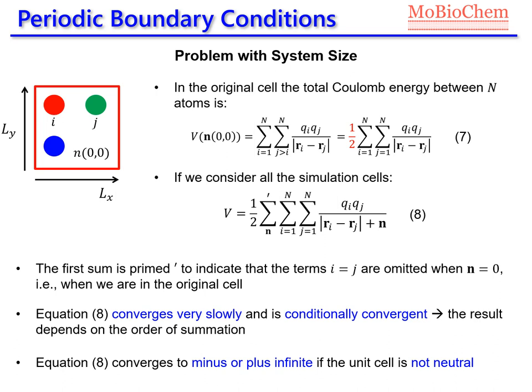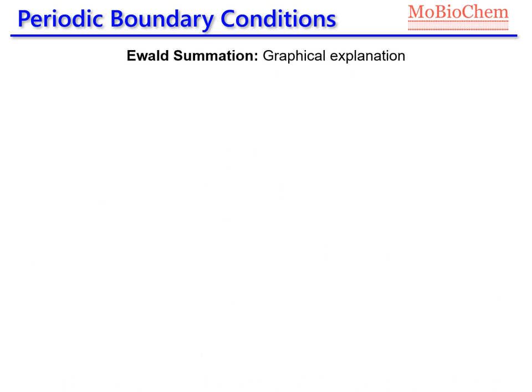In order to solve all these problems related with the size of our system and related with the cutoff we are applying, usually we use what is called the Ewald summation. This is a very complex method and here we are going to see only a very short graphical explanation of the method.